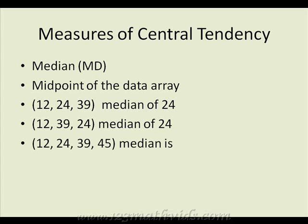What do we do in this circumstance? Here we have the data set 12, 24, 39, and 45. Since we have four data points, the midpoint of the data array would be somewhere between that 24 value and the 39. Therefore, to find the median we take the average value. We take 24 plus 39 and divide by 2. It gives us 31.5, therefore our median is 31.5.